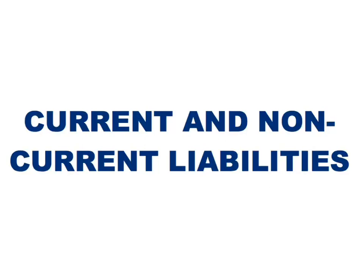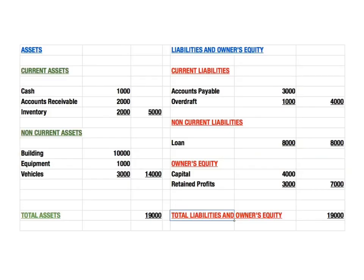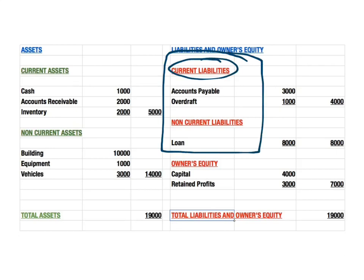This video will focus on current and non-current liabilities and the differences between them. Current and non-current liabilities are found on a balance sheet. There's a previous video that looks at a balance sheet and another one which looks at the difference between current and non-current assets. This video is going to focus on this area of the balance sheet, specifically looking at the difference between current and non-current liabilities.